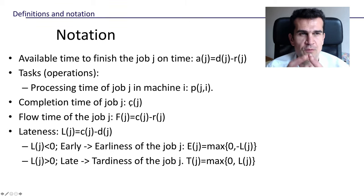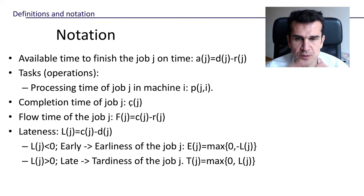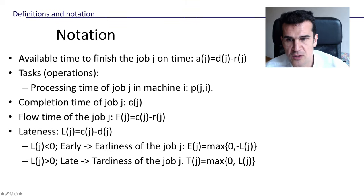And once we've fixed a certain order for the jobs we want to process, each job will have a completion time, which is the time at which the job is finished. And we're going to denote that completion time with C for completion.